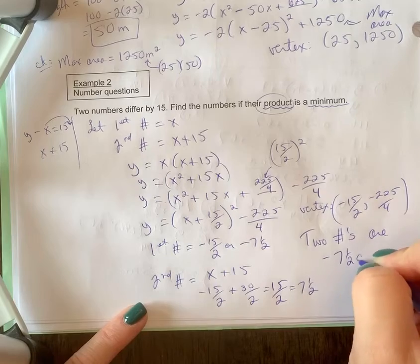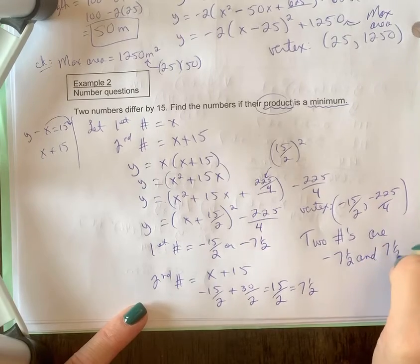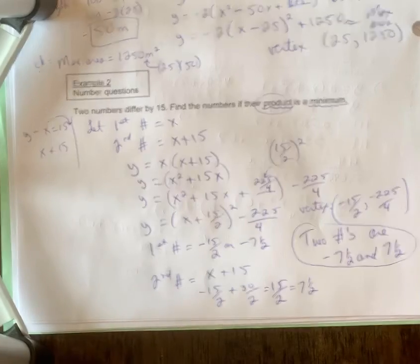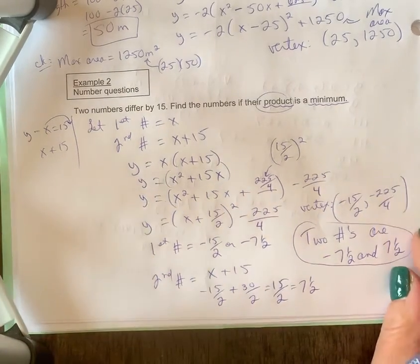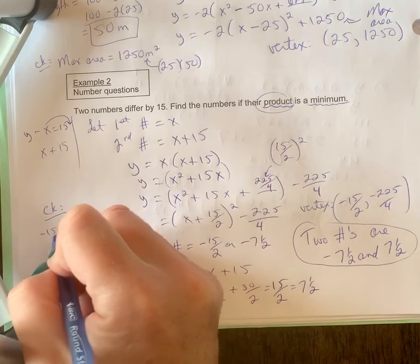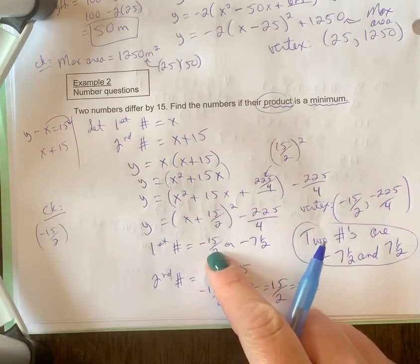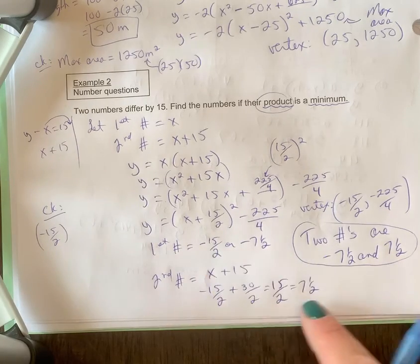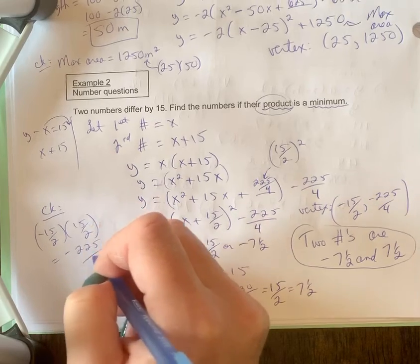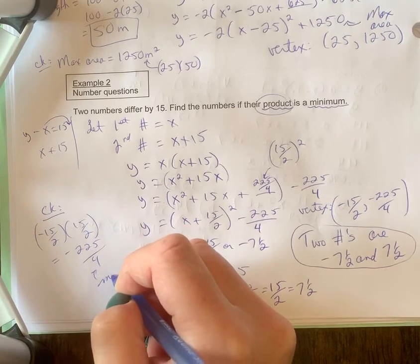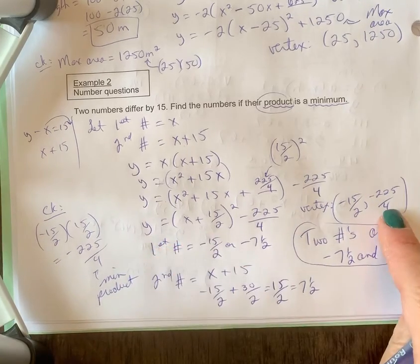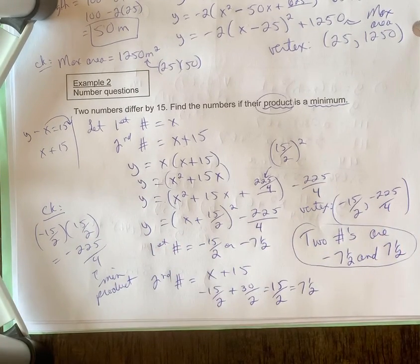If I wanted to check this, these two numbers should multiply to my minimum. So negative 15 over 2 times 15 over 2 equals negative 225 over 4. This one is my minimum product which is the y value of the vertex, so this check does work out.